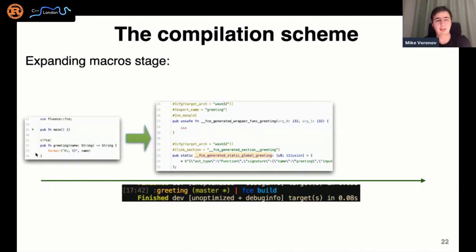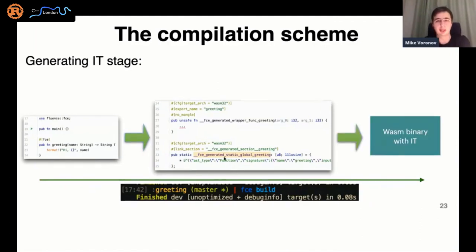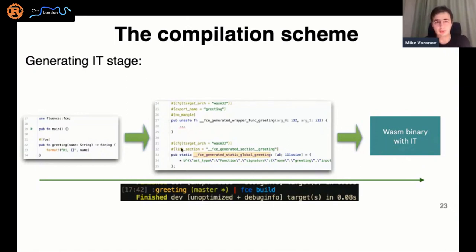To generate a binary with interface types, we need a custom section with interface types. But there's another problem: in Rust, the current procedural macros are not stateful, and moreover, the order of applying is not defined. To solve this, we use a two-stage scheme of compilation. This example expands to a form that has globals containing a JSON string with all information needed to generate interface types. This global is placed inside a custom section, and on the last step we use our FCE utility to remove such sections from the intermediate binary and put them into the result. You can just run FCE build and pass all flags like you would with cargo.